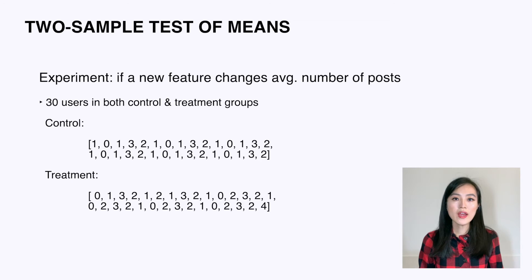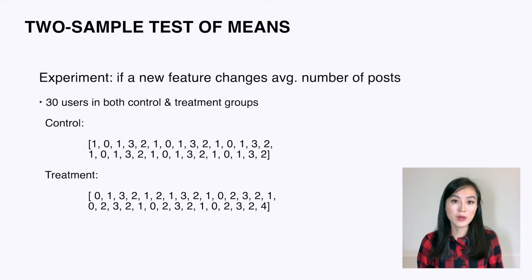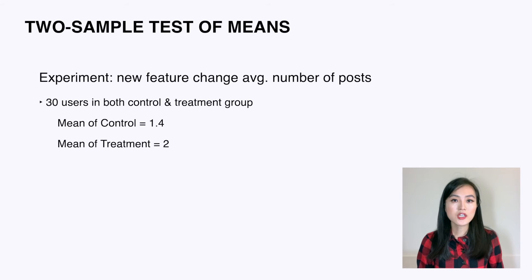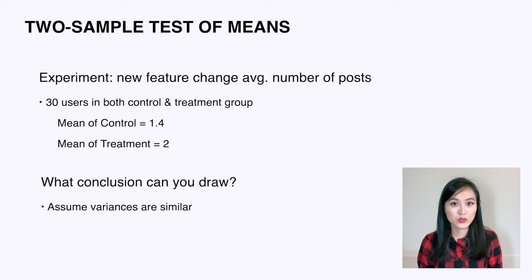We've just covered using the z-test to compare two Bernoulli populations and how to determine statistical and practical significance. Let's move to the next example. We run an experiment to test if adding a new feature changes the average number of posts created per user. Both control and treatment groups have 30 users. The first array represents posts per user in the control group, and the second array has posts per user in the treatment group. The control group has a mean of 1.4 and the treatment group has a mean of 2.0.